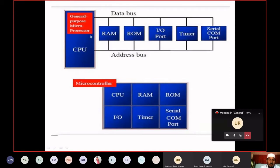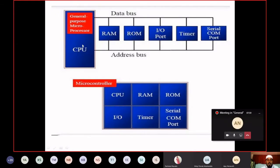This is our CPU — our processor. Internally it will be having ALU, some registers, and other things. This CPU is fabricated on a chip, on an IC. RAM, ROM, input-output port, timer, and serial communication port — all are external to this IC.